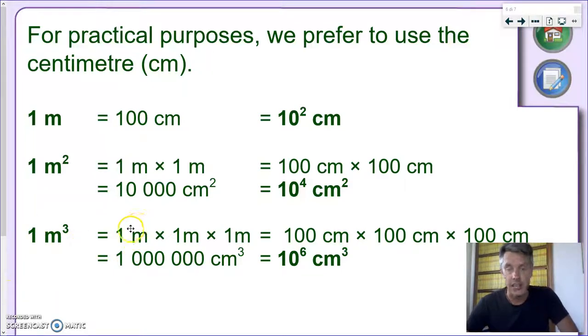A cubic meter is, as I told you, the volume of a cube with a side of one meter. So it's one meter times one meter times one meter, which means 100 centimeters times itself three times. That means one million cubic centimeters. So one cubic meter is 10 to the sixth cubic centimeters.